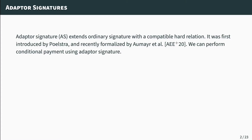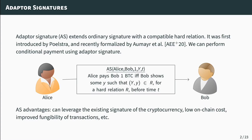An adapter signature is an ordinary digital signature scheme extended with a hard relation. It was first introduced by Poelstra and very recently formalized by Aumeier et al. Adapter signatures can also be used to construct conditional payments, where the payment is conditioned on the hard relation R. Alice pays Bob one Bitcoin if and only if Bob can produce the witness y before time t. The advantage is that we do not need an additional cryptographic primitive such as a hash function — we can leverage the digital signature scheme already supported by the cryptocurrency. Furthermore, adapter signatures provide low on-chain cost and improve the fungibility of transactions.